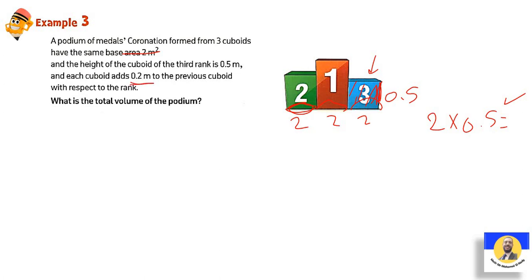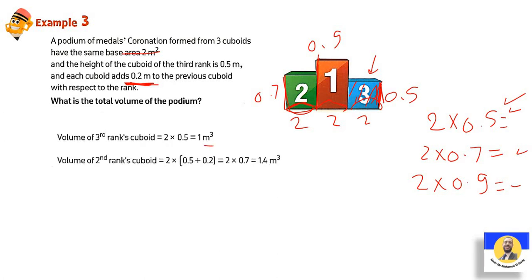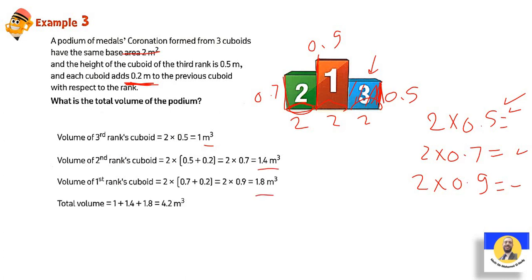Each cuboid adds 0.2 meter to the height of the previous. So if the third is 0.5, the second height is 0.7 — so 2 times 0.7 gives the second volume. The first height is 0.7 + 0.2 = 0.9 — so 2 times 0.9. After finding all three volumes: first = 1.8 m³, second = 1.4 m³, third = 1.0 m³. Add them: total = 4.2 m³.